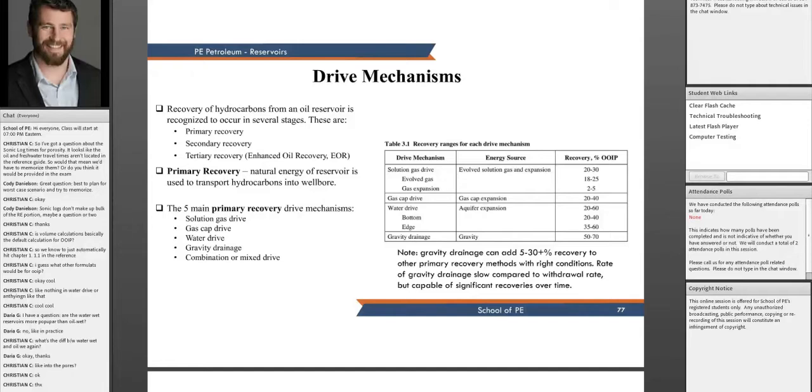So, drive mechanisms: the recovery of hydrocarbons from oil and gas reservoirs happen in several stages. Most everyone's familiar with primary and secondary recovery, and then the third is tertiary recovery, also known as enhanced oil recovery. Primary recovery is the natural energy of the reservoir that is used to transport your hydrocarbons into your wellbore, and there's really four main primary recovery drive mechanisms and then the fifth one is kind of a hybrid.